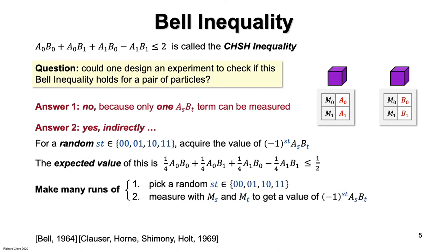Now here's the experiment. Make many separate runs of the procedure where you pick a random ST and then measure MS and MT to sample minus one to the ST ASBT for a pair of particles.